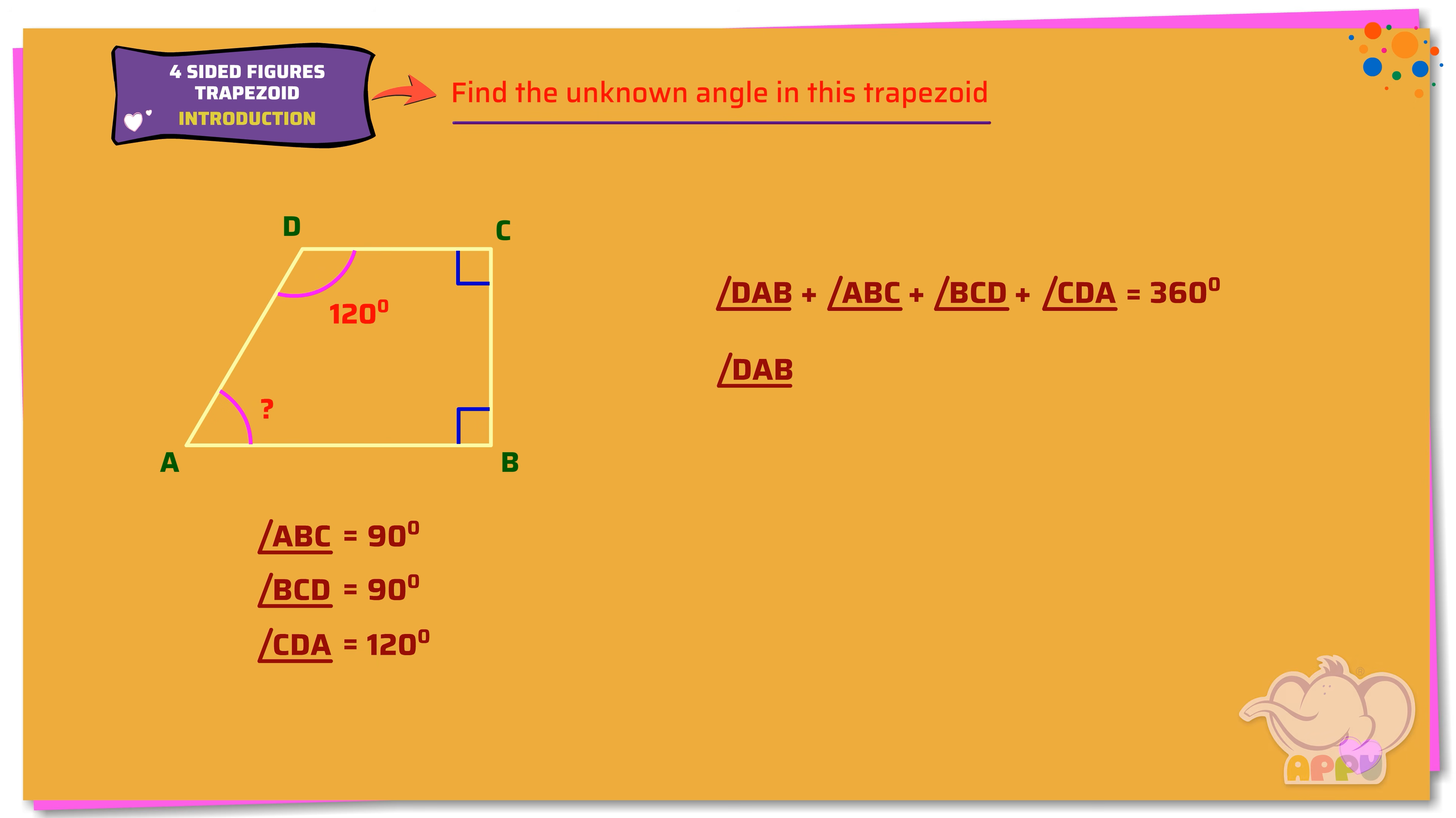Angle DAB plus 90 plus 90 plus 120 equals 360. Angle DAB plus 300 degrees equals 360 degrees.